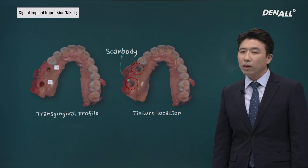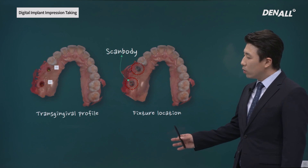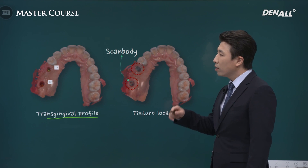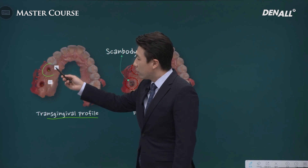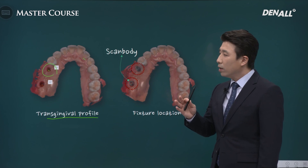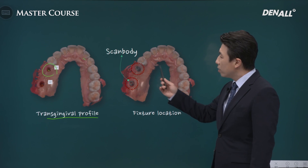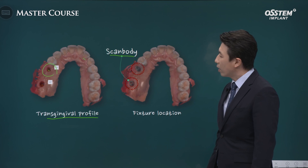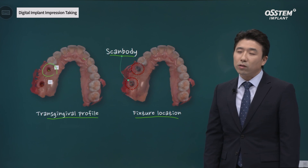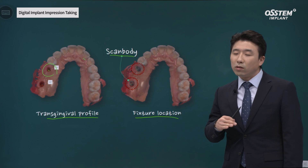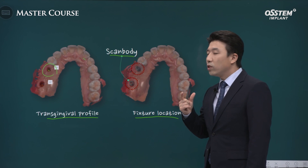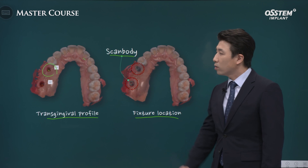Scan bodies are used to take impressions of implants. The trans-gingival profile is obtained; healing abutments are connected, then removed, and the area is scanned together with the surrounding teeth. The scan body is connected and further scanning is performed. Scan bodies are used to obtain information on implant locations — such as implant placement depth, direction, position of the teeth, and direction of the hex structure, which functions as an anti-rotational feature.